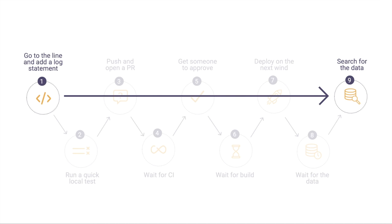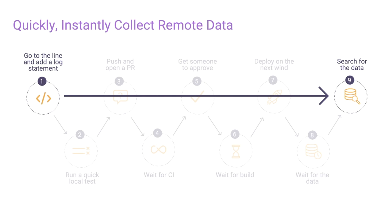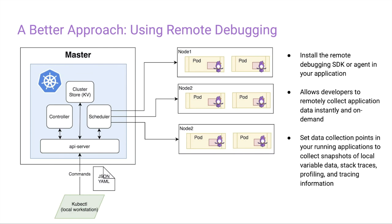That definitely brings up the need for a better approach — something that reduces the amount of context switching and wasted time that developers have. Something that allows them to just go in immediately while the application is running, add additional logging statements, get the data they need from their application while it's running, and resolve the defect from there. These debugging tools and remote debuggers really allow you to quickly and instantly collect remote data on demand from your application.